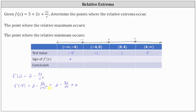Notice that when x equals positive 5, the square is still 25, so the first derivative is also positive in the interval from 4 to infinity. Testing x equals negative 1: f prime of negative 1 equals 2 minus 32 divided by 1, which equals negative 30, which is less than zero. Therefore the first derivative is negative over the interval from negative 4 to zero. Similarly, when x equals positive 1, the square is still 1, so the derivative is also negative over the interval from zero to 4.